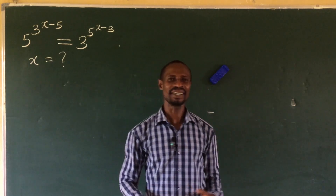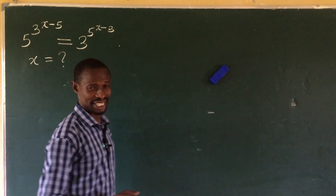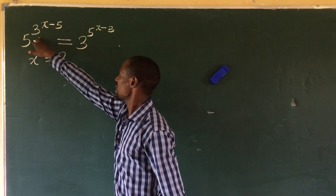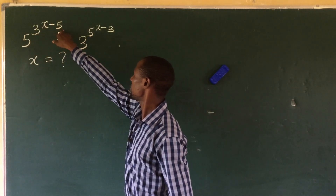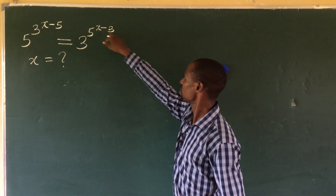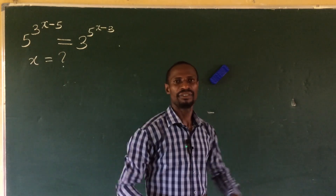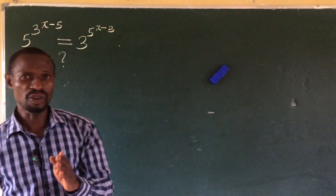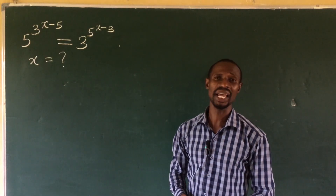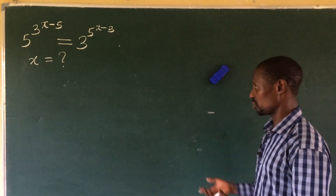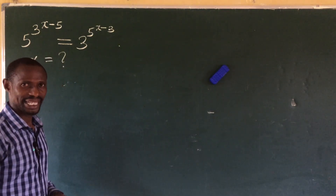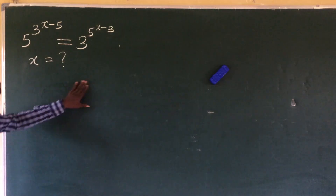Today I must push something out. Before us we have a question on the board — it's an exponential equation. The question reads: 5 to the power of 3, all raised to the power of x minus 5, equals 3 to the power of 5, raised to x minus 3. What is the possible value of x? Before we go into this, if you're new here, kindly subscribe and turn on the bell notification so you get notified whenever we drop a new video.